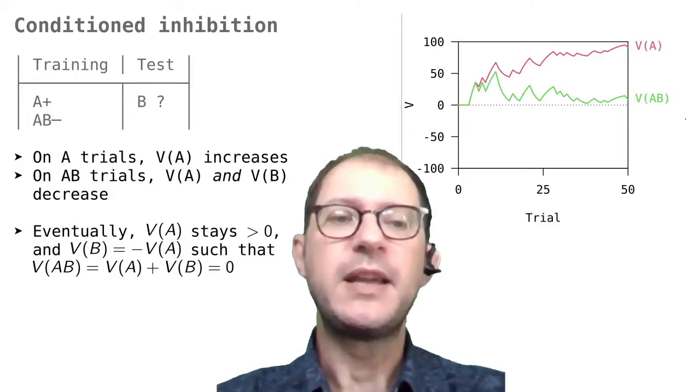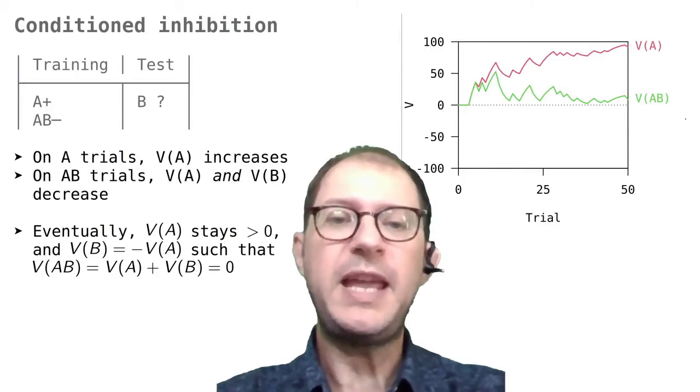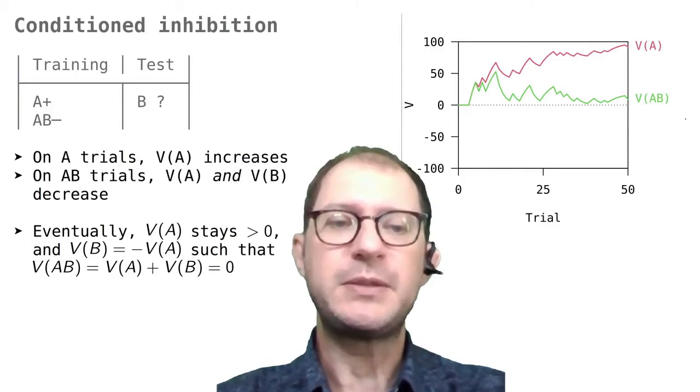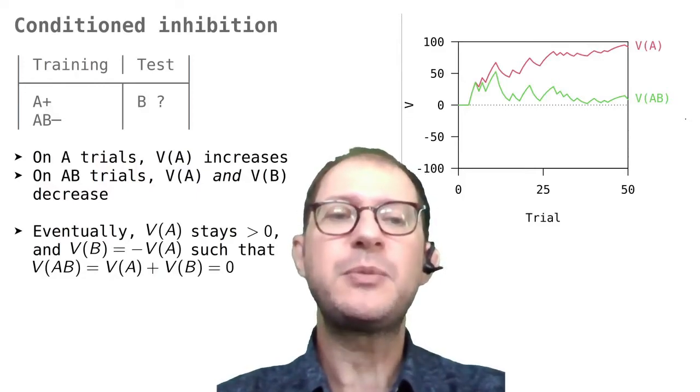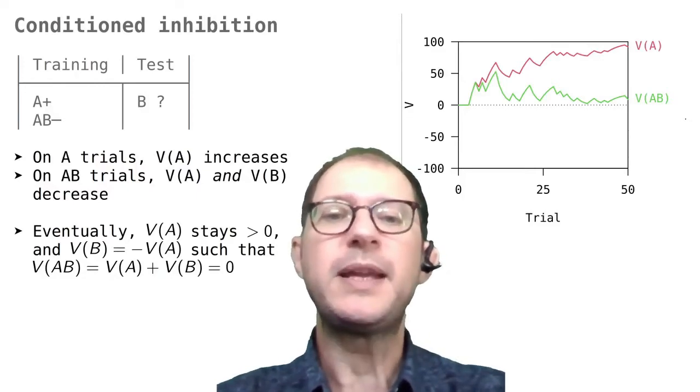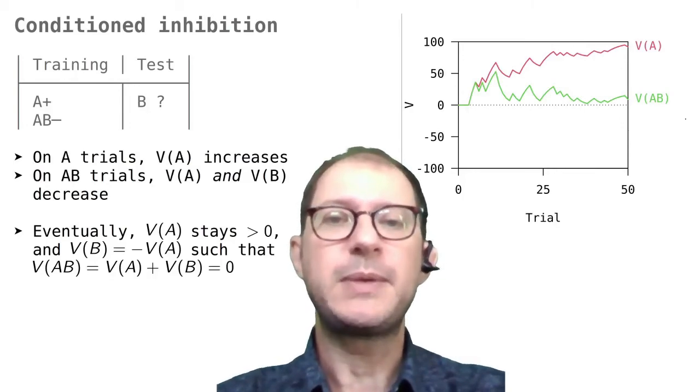At each trial, the computer flips a coin and decides whether to present A rewarded or B unrewarded. This mimics what is done in real experiments.